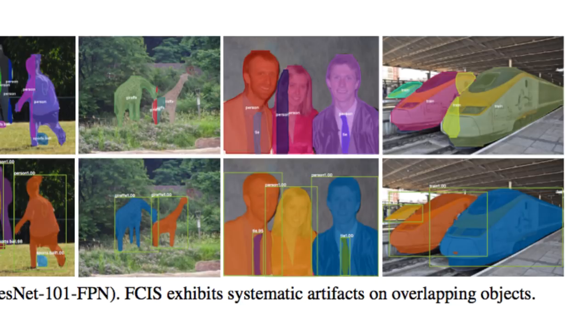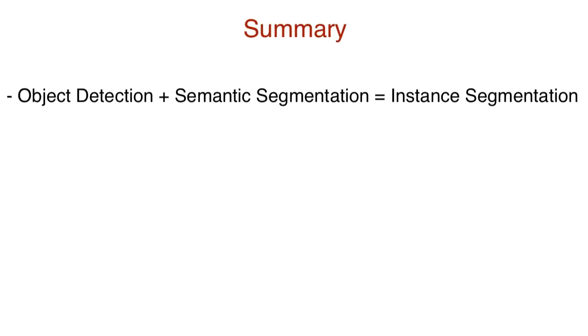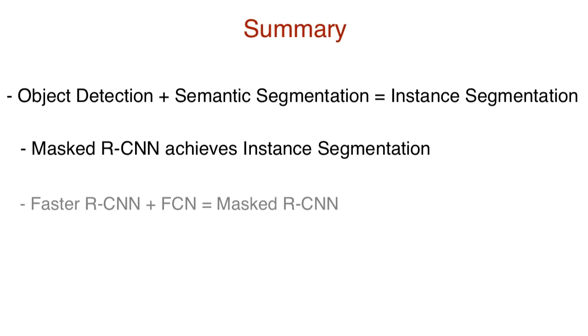Here are some key things to remember. Instance segmentation is object detection with semantic segmentation. Masked R-CNN is an architecture to achieve instance segmentation. It combines faster R-CNNs with fully convolutional networks, FCNs.